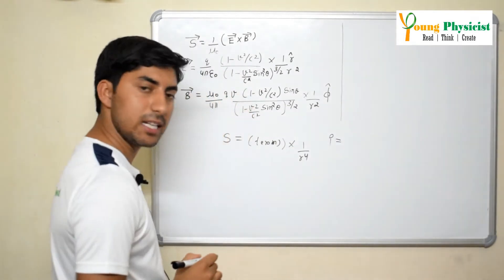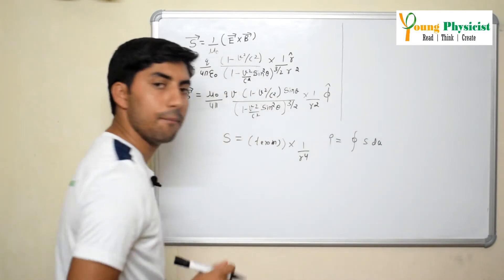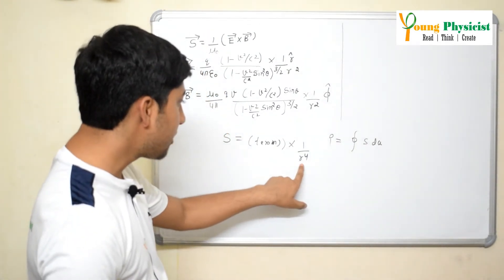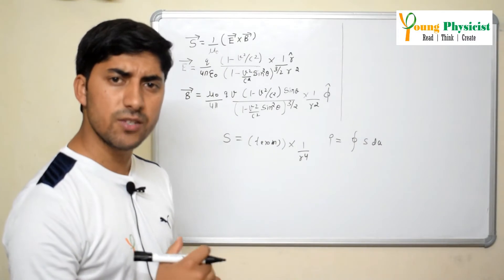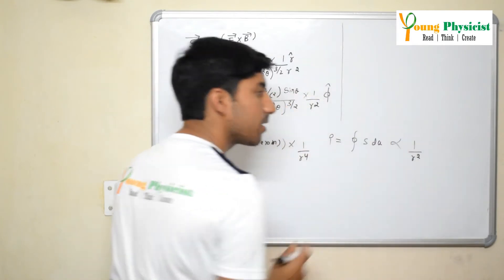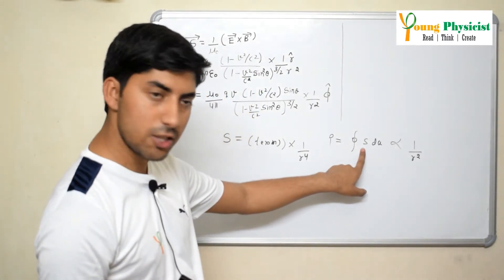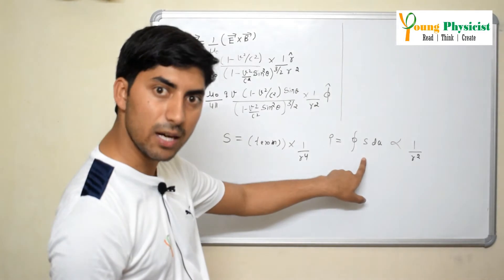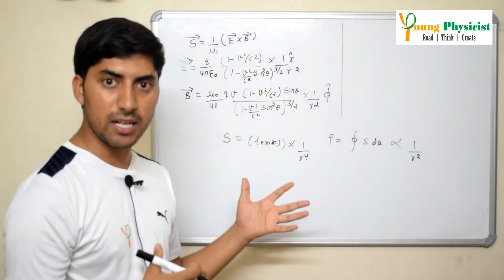Now let's calculate the power being carried out by this charge particle. Power is P = ∮S·dA over a closed surface. The Poynting vector depends inversely on r⁴, and the area element contains a term r². So the power will depend inversely on r² — the r² from the area cancels with part of the r⁴, leaving an overall 1/r² dependence.